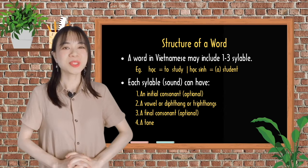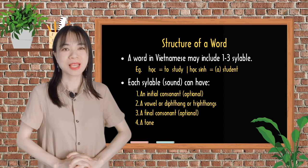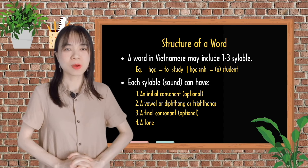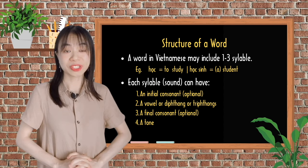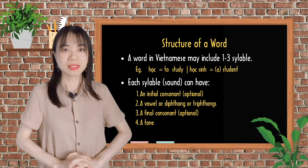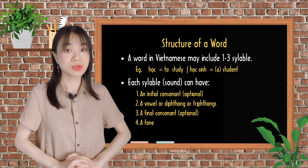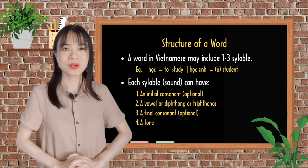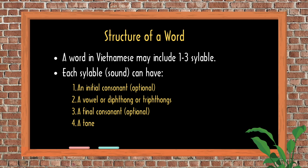A Vietnamese word may include from one to three syllables. For example, học, which means 'to study,' is a one-syllable word. But học sinh, which means 'a student,' is a two-syllable word.